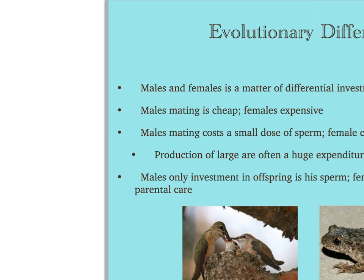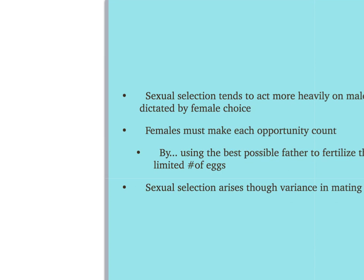The evolutionary difference between males and females is a matter of differential investment — mating is cheap for males while it is expensive for females. Males invest only a small dose of sperm, while females invest much more. Producing large eggs is a huge expenditure of energy and time, and females provide all the parental care. Sexual selection therefore tends to act more heavily on males, dictated by female choice — females must make each opportunity count by choosing the best possible father to fertilize their limited number of eggs.